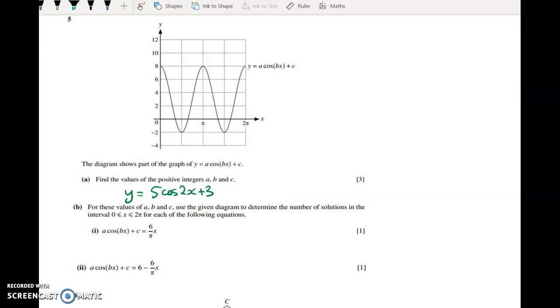We're told that for these values of a, b, and c, use the given diagram to determine the number of solutions in this interval for each equation. This looks really horrible when you first see it, but then you realize this is just the equation of a straight line with a y-intercept of 0, going through the origin. So this point is on the straight line, and now we'll find another point and join the dots.